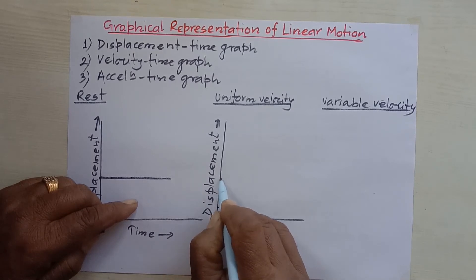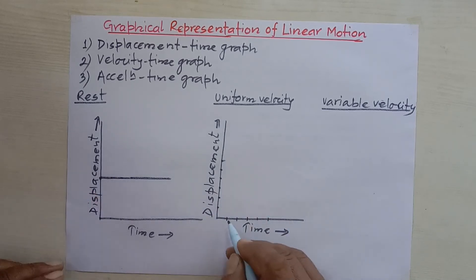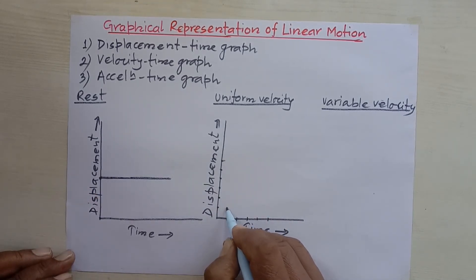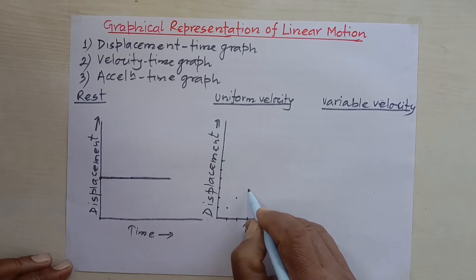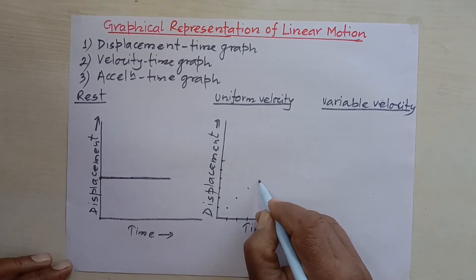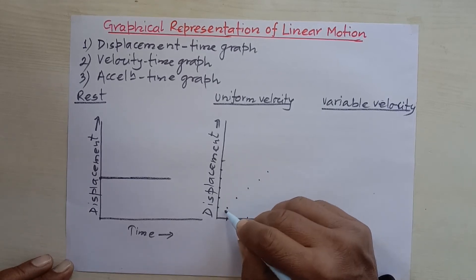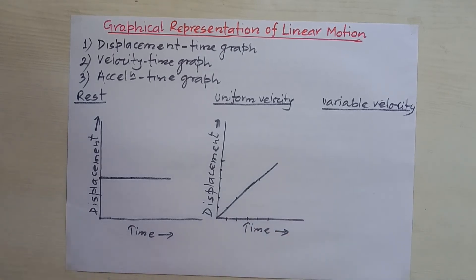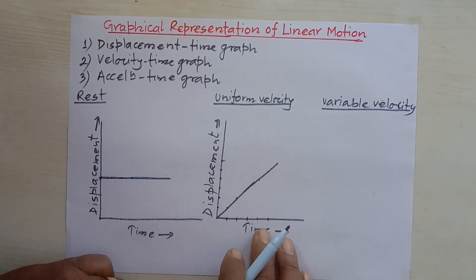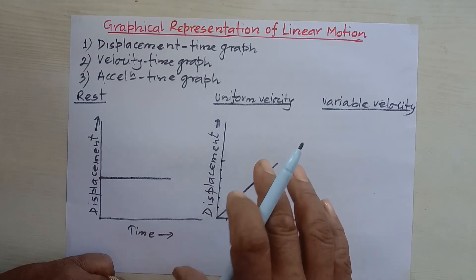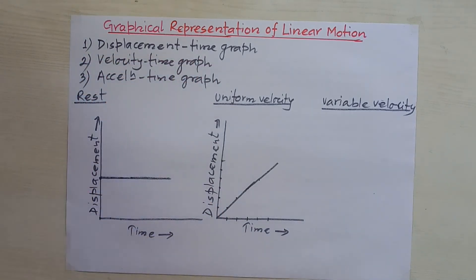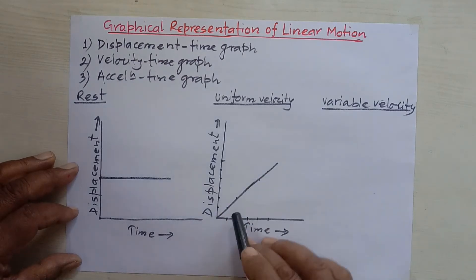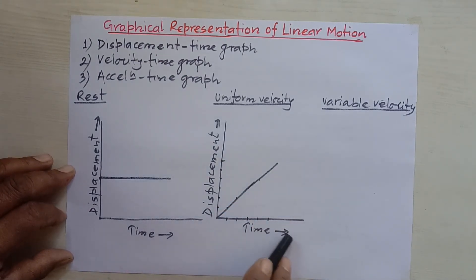If a body moves this way, plotting the points — the position at the end of each second — and drawing the graph gives a straight line. This straight line is tilted towards the time axis. So the displacement-time graph of a body moving with uniform velocity is a straight line tilted towards the time axis.